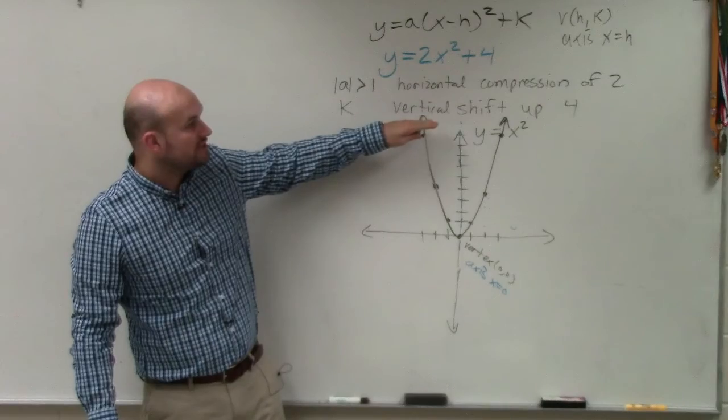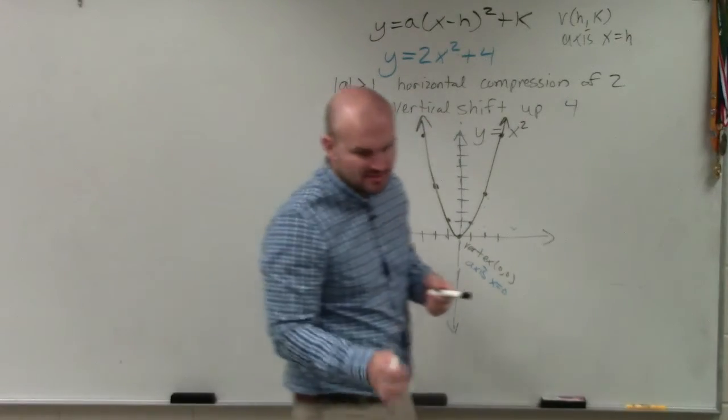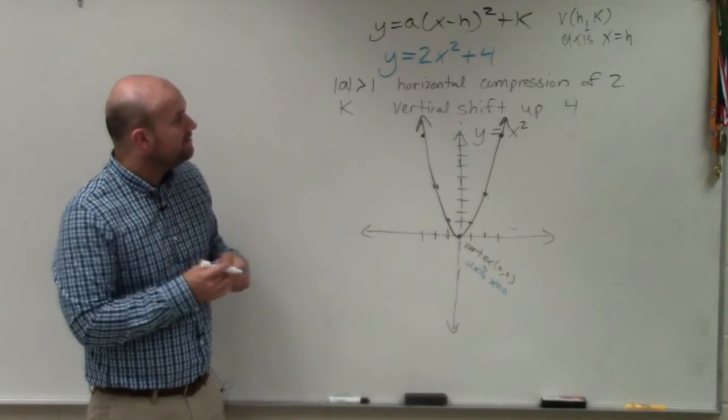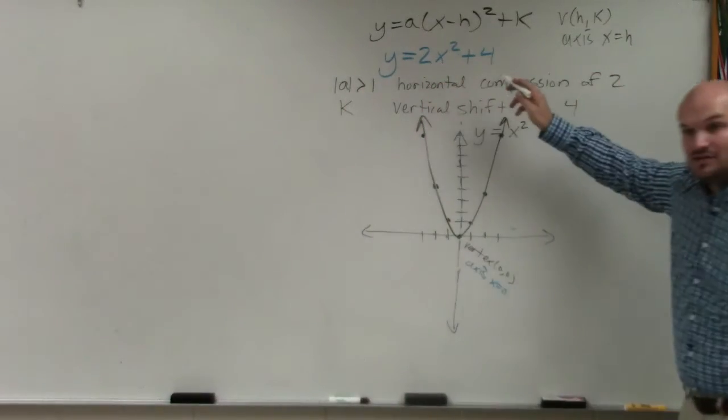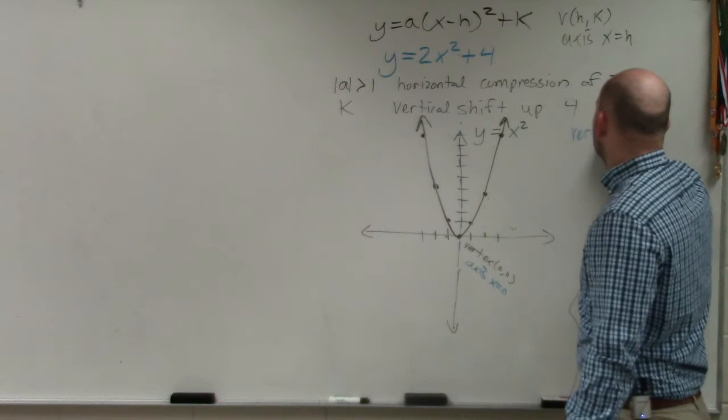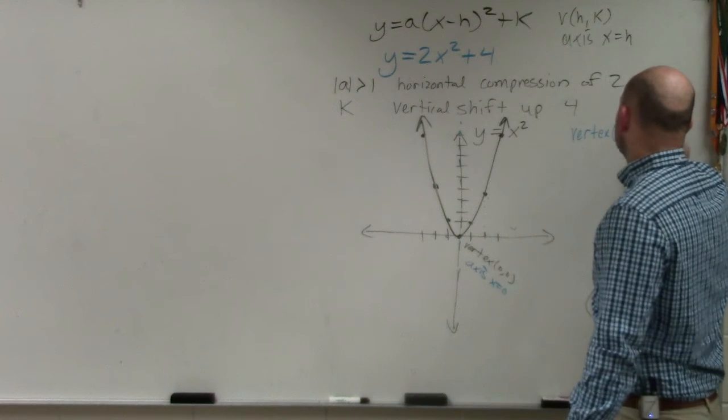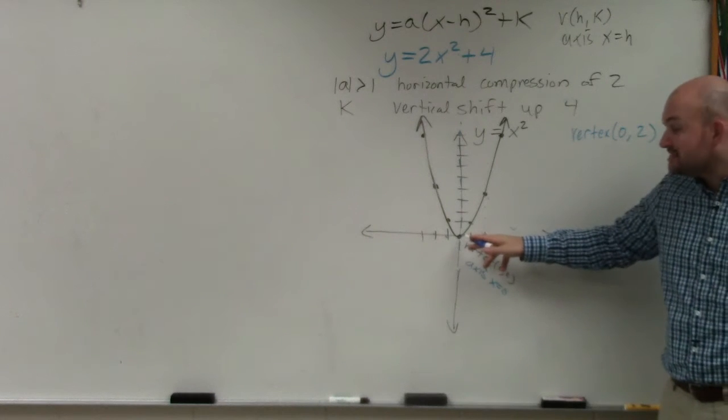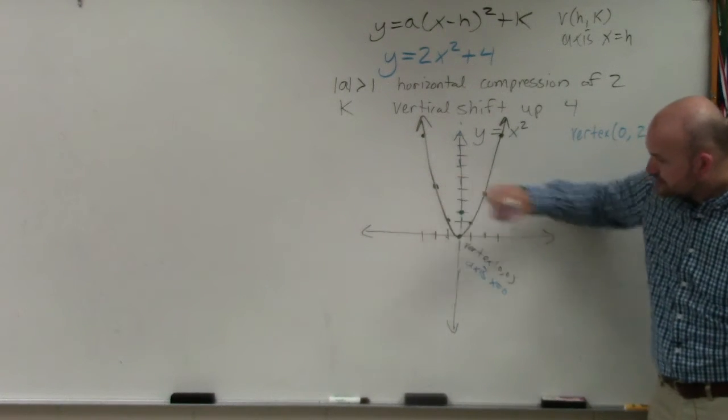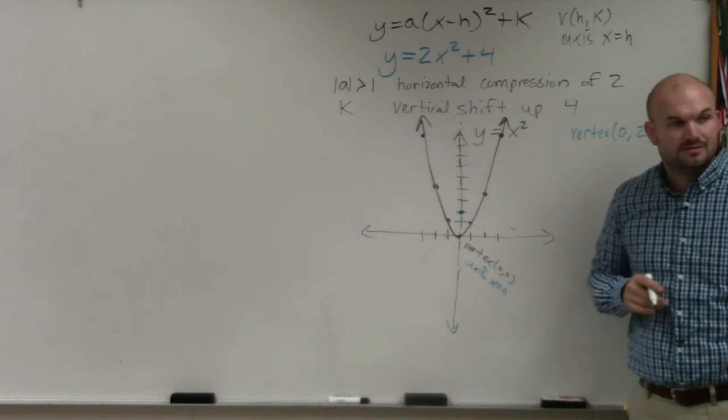Forget about the horizontal compression right now. All we have is a vertical shift up. Our new vertex - they didn't ask us to find the vertex, but the way I like to do it is we know we have a k. We don't have an h, though. So therefore, h is going to be 0. So my new vertex is at (0,4). Instead of my vertex being at (0,0), it's now at (0,4).